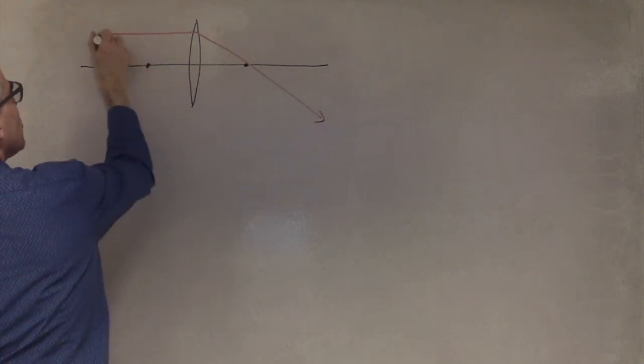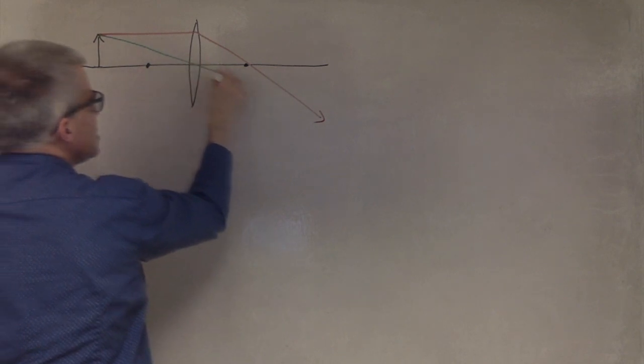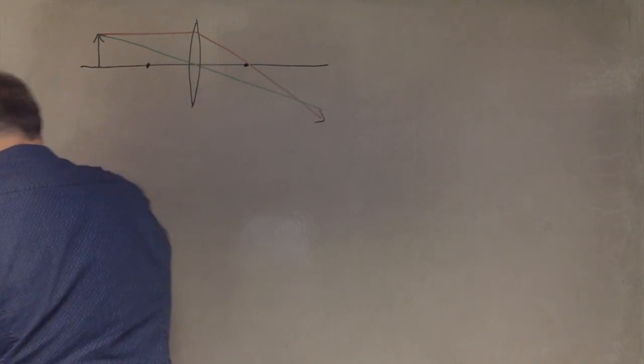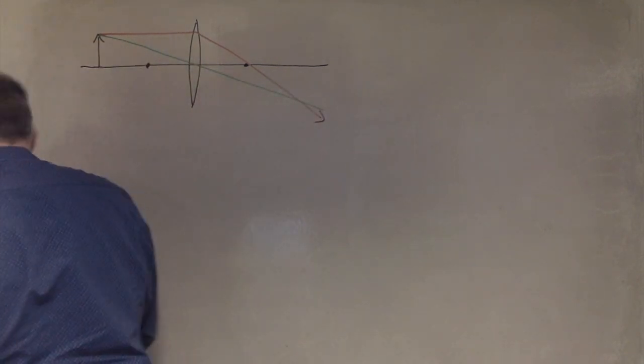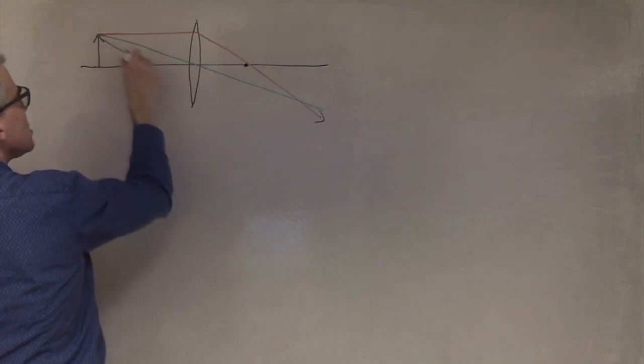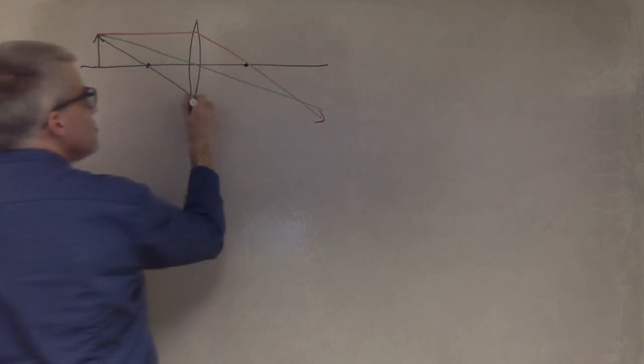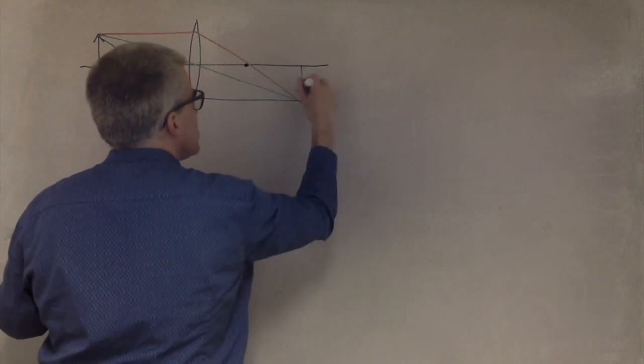Second ray, the green ray, through the center, it's like a window, so it goes straight through. Third one, through the near focal point, bends and goes parallel, and there's your image.